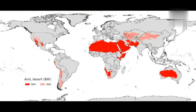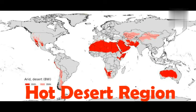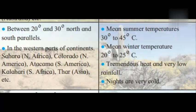Our next point is the Hot Desert Region. The red color on this map indicates the desert region of the world. The extent of this region is between 20 degree and 30 degree north and south parallels in the western parts of continents — North Africa, Colorado in North America, Atacama in South America, Kalahari in South Africa, and Thar in Asia.